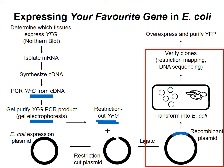In the last video, I described how to generate a recombinant DNA plasmid containing the cDNA for your favorite gene. Now I will talk about introducing the plasmid into the bacterium Escherichia coli and verifying that the bacteria contain a plasmid with the desired sequence.